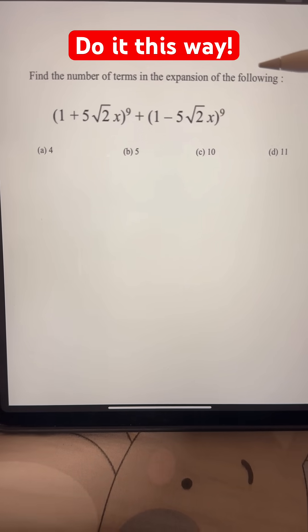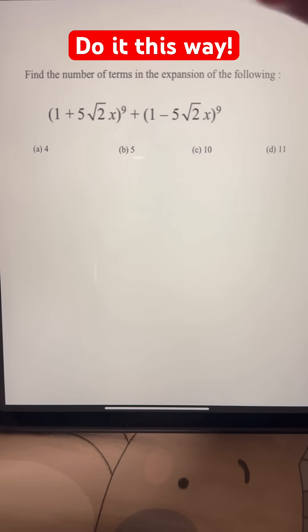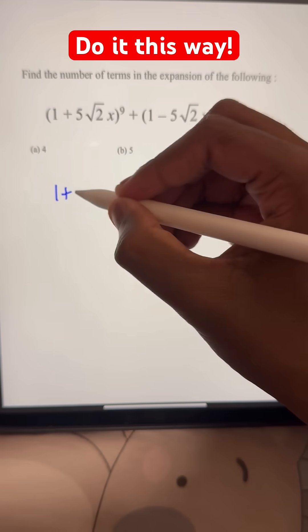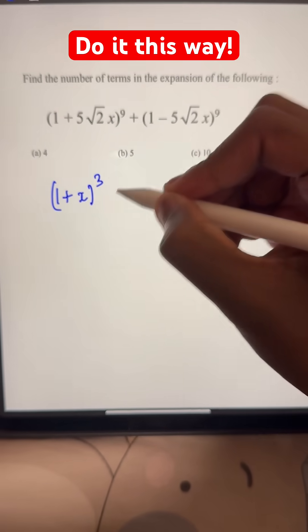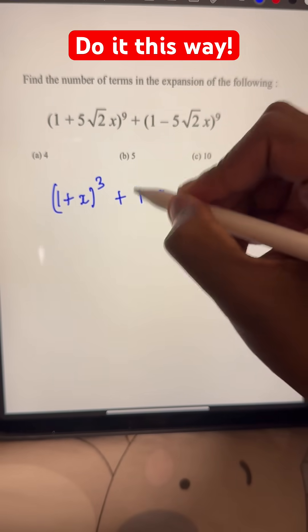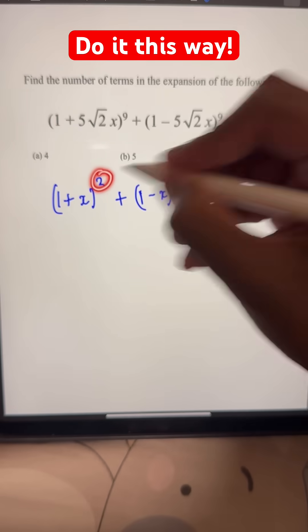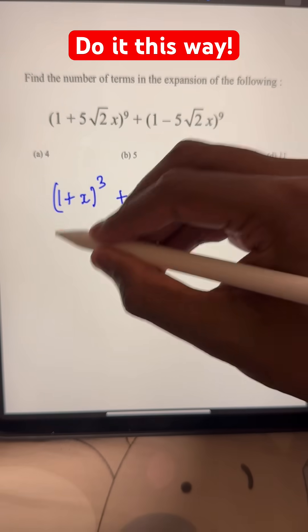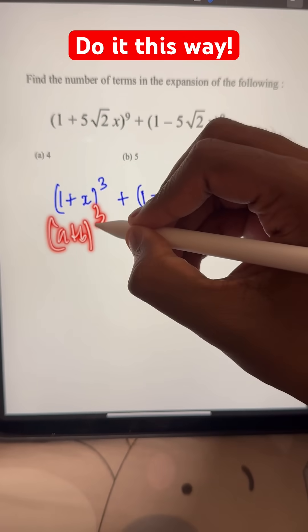To solve this, I'll walk you through an easier version of the question: find the number of terms in (1+x)³ + (1-x)³. The reason I'm doing this is because it's much easier to understand - we have a formula for (a+b)³ so we can expand it directly.